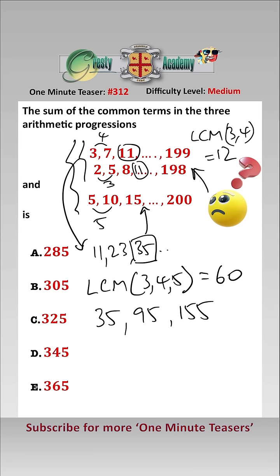The fourth one will be beyond the end of each of the sequences. So therefore there are three terms in common. 35 add 95 add 155 is 285, which is answer A.